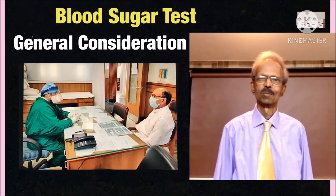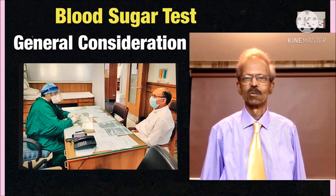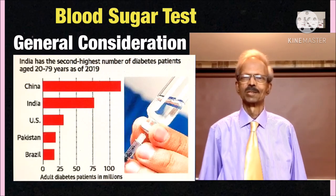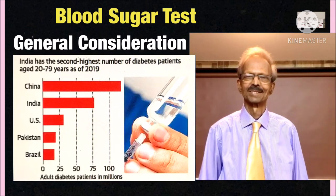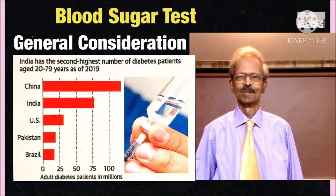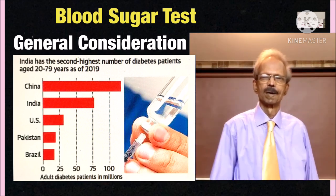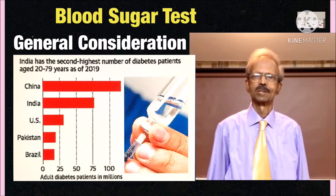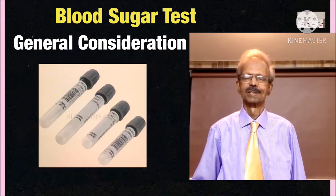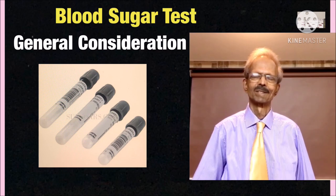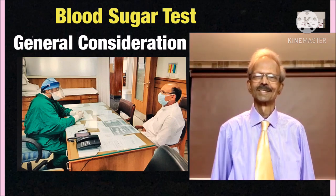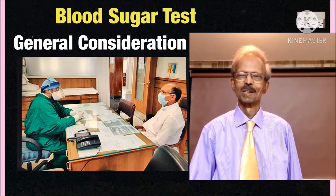Blood sugar test is mainly performed to find out if a person is suffering from diabetes mellitus. There are an estimated about 73 million cases of diabetes in the adult population of India. In urban areas, the percentage of diabetic persons is about 11 to 14%, and in rural areas it is 3 to 8%. In clinical laboratories, we find a large number of blood sugar samples every day, and this test is very important since diabetic persons can get proper treatment only on the basis of an accurate test report.